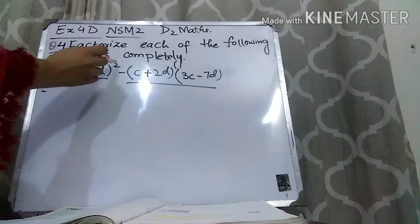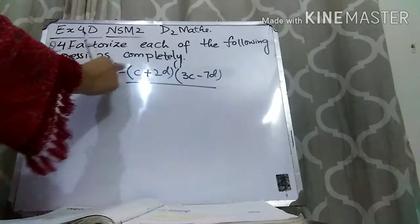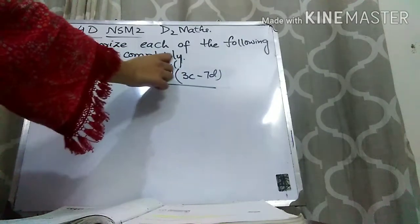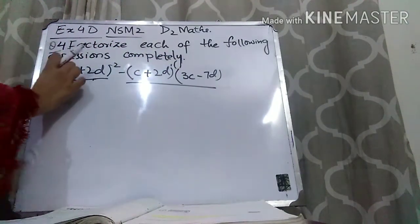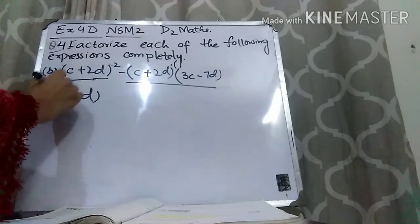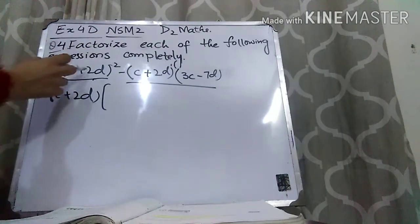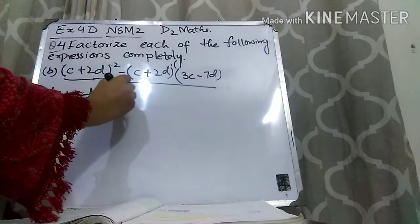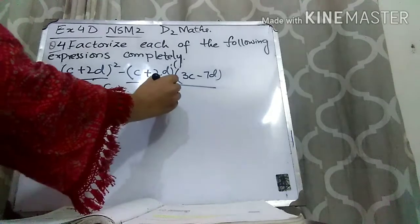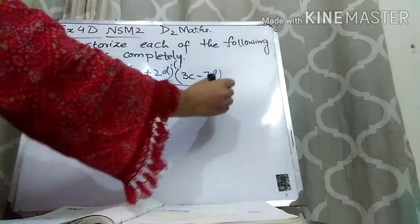Whenever you take common and the term you are taking has a power, you take it with the lower power. Here the power is 2 and here it is 1, so you take c plus 2d common with power 1. What is left inside the bracket: from the first term, since it was squared, one c plus 2d remains; from the second term, 3c minus 7d is left.